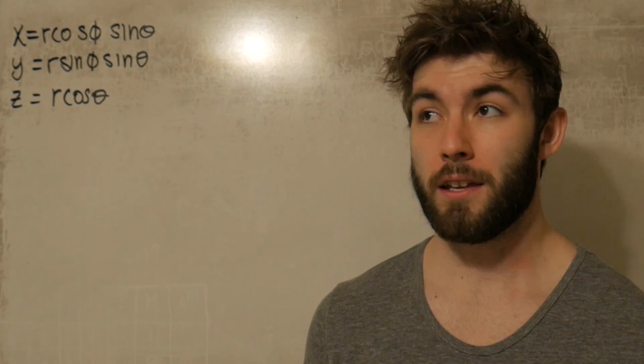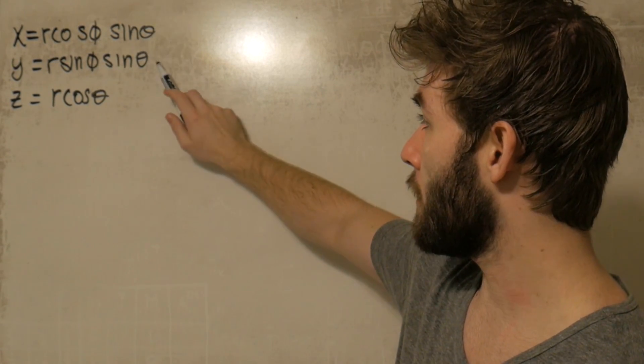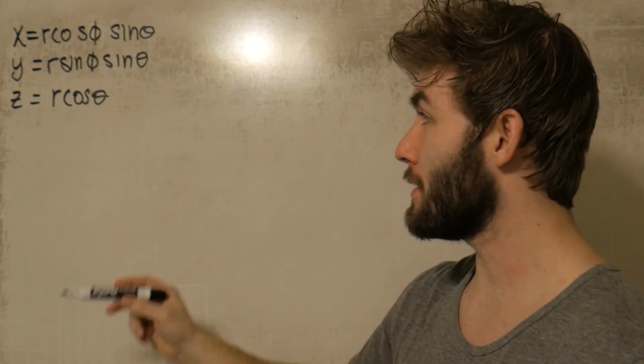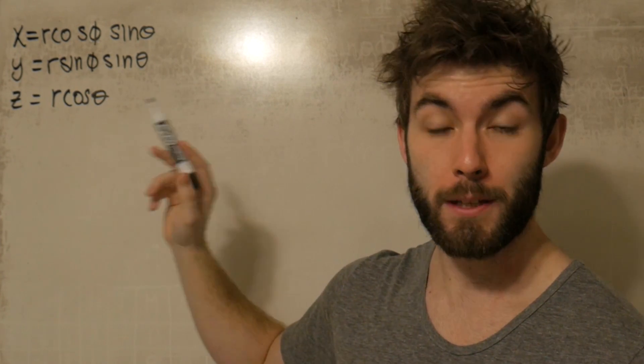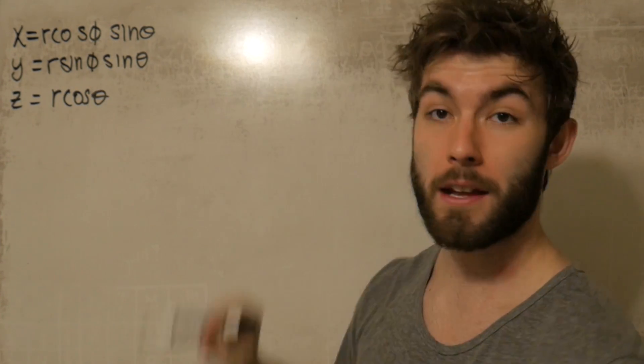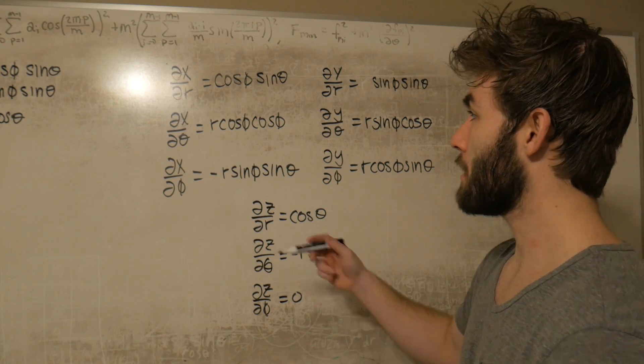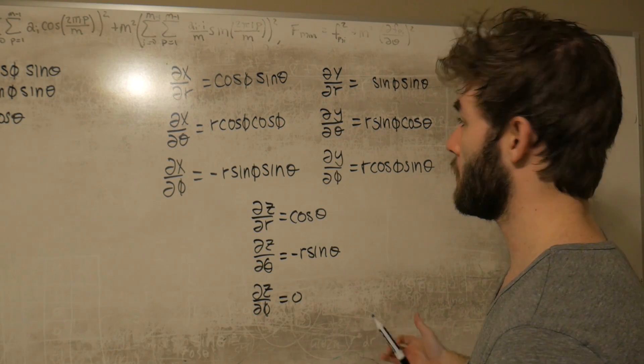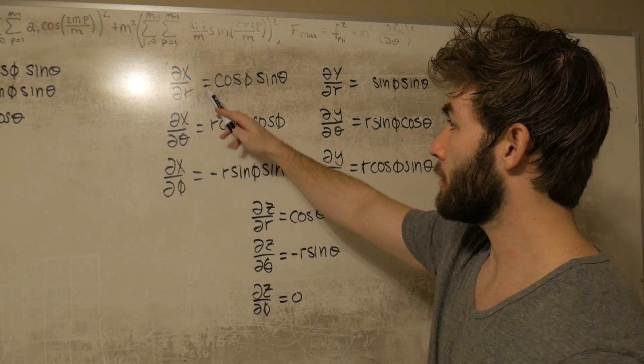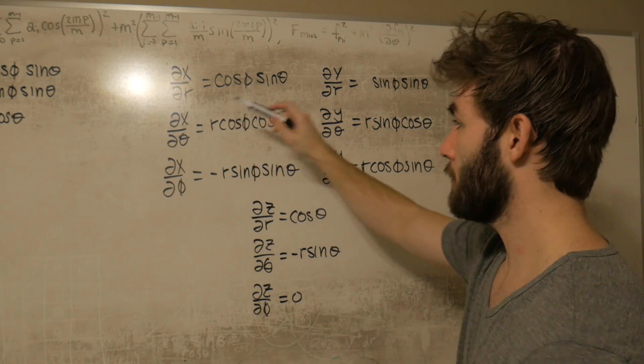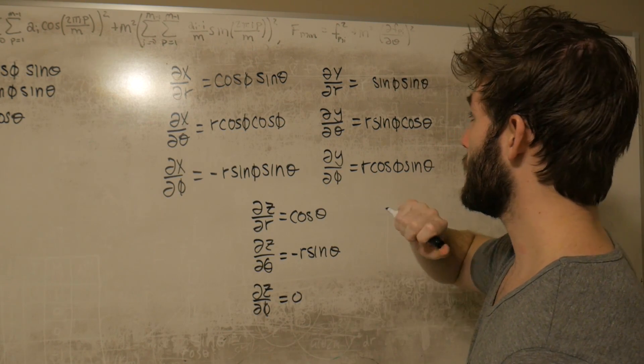Now the first thing that we're going to want to do is start taking derivatives of each of these functions x, y, and z with respect to their independent variables r, phi, and theta. After going through a little bit of the calculus, these are the relationships we should all get after taking the derivative of each of those functions with respect to the three independent variables.